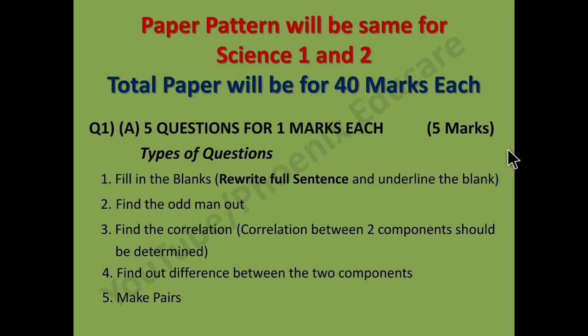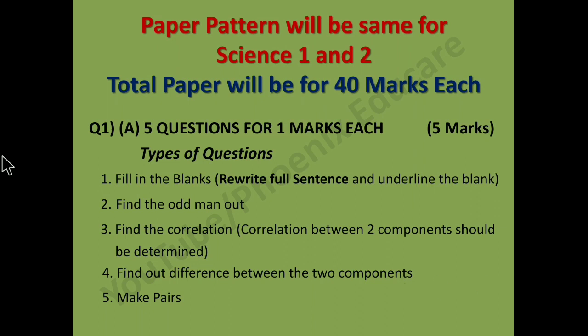Next type of question in Q1A is find the odd man out. Third type is find the correlation — correlation between two components should be determined. Fourth is find the difference between two components. Fifth is match the pair. These types of questions can come for the 5 marks of Question 1A.